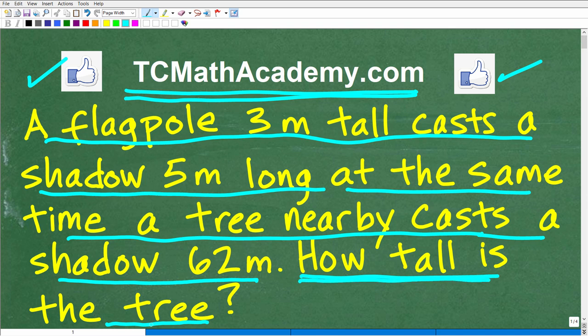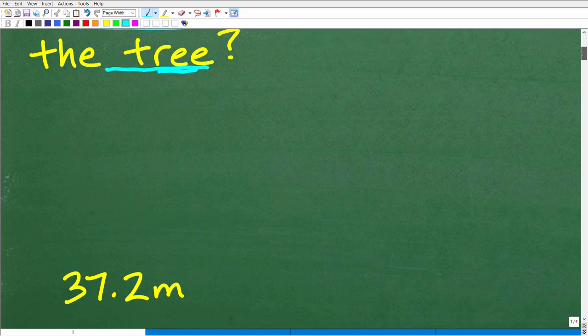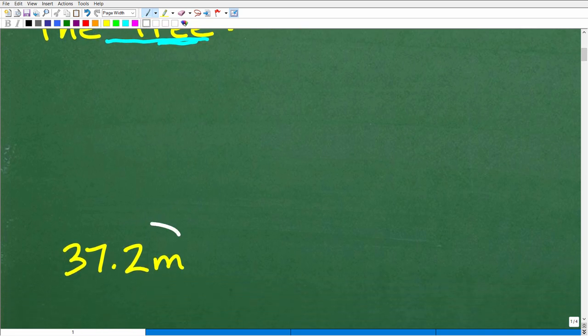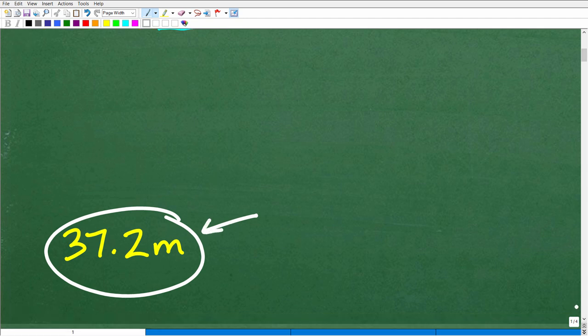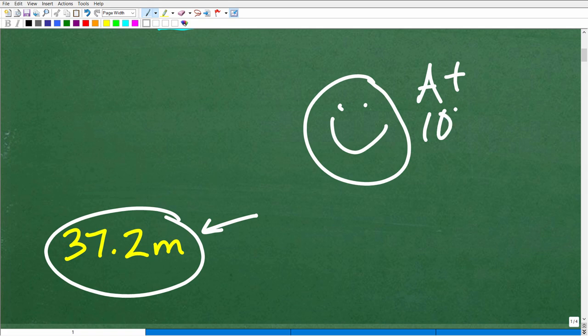Again, the question is how tall is this tree? Of course, we have this flag casting a certain shadow. We know the shadow of the tree. So based upon this information, how tall is the tree? Well, the tree is 37.2 meters tall. That is the correct solution, and if you got this right, that is very impressive. Matter of fact, you definitely earned a nice little happy face and an A+, 100%, and multiple stars. So you can tell your friends and family that indeed you understand what's going on here.